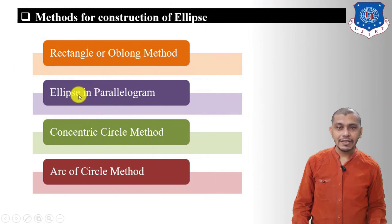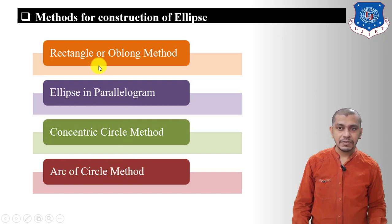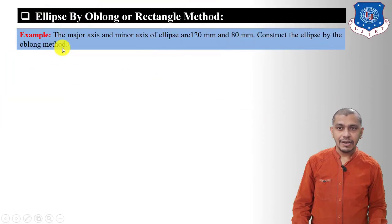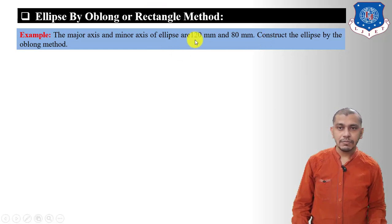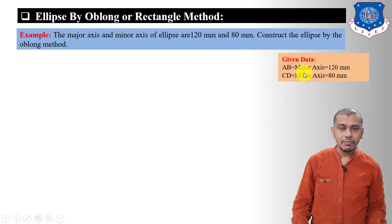First is the rectangle or oblong method. Second, we will discuss ellipse in parallelogram. Third, the concentric circle method, and lastly the arc of the circle method to draw an ellipse. So let's start with the rectangle or oblong method. The given data is: the major axis and minor axis of the ellipse are 120 mm and 80 mm respectively. Let AB be the major axis equal to 120 mm and CD equal to 80 mm, which will be our minor axis.